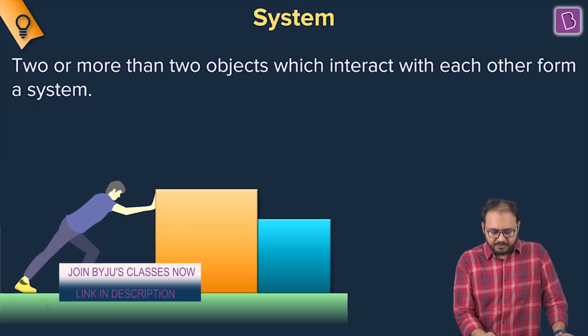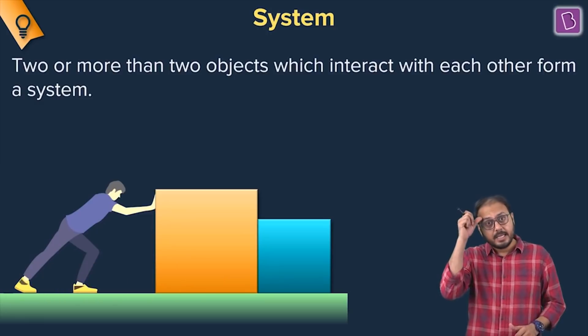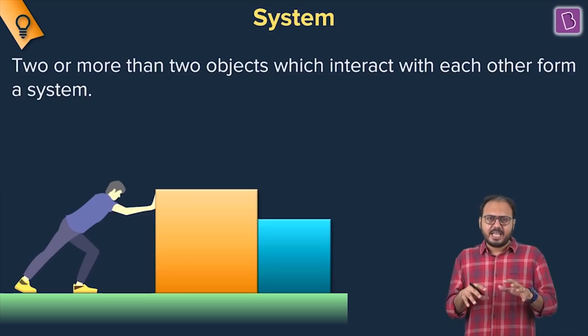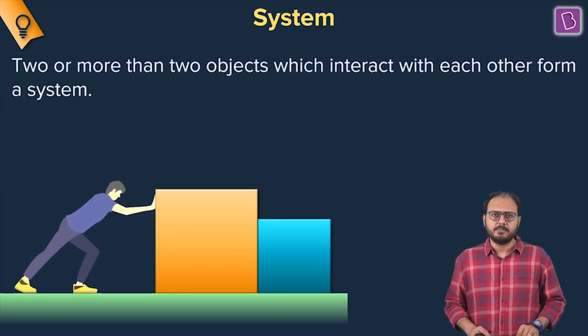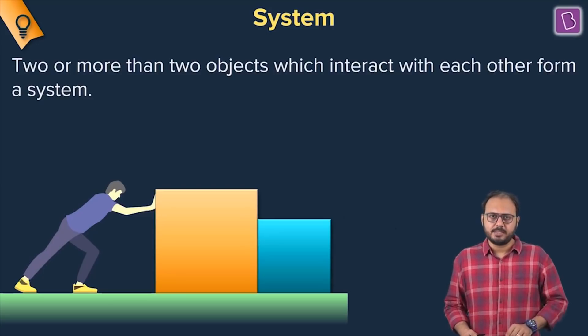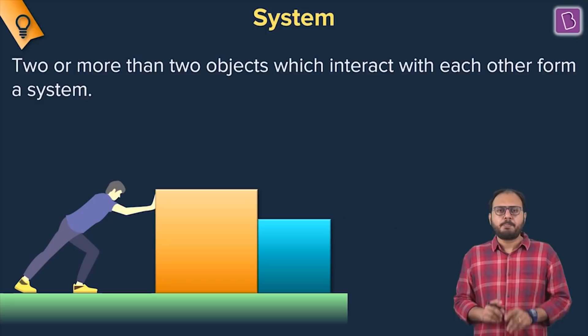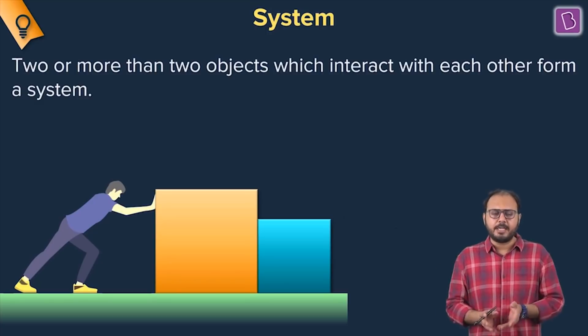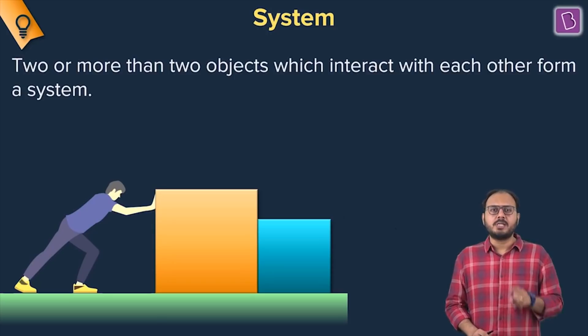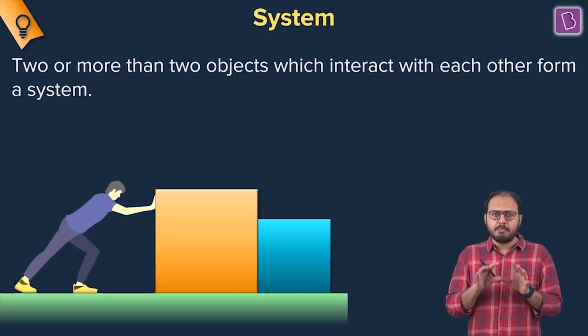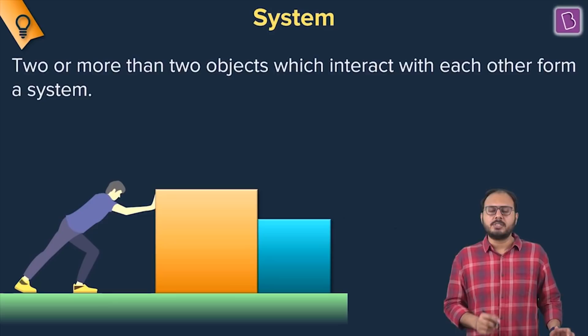That's one definition. Also, I can say a system is nothing but what I am looking at. Everything else in the universe is surroundings. What is the biggest pie? The biggest pie is universe. What slice you are looking at is called system, and universe minus your system is called surrounding.